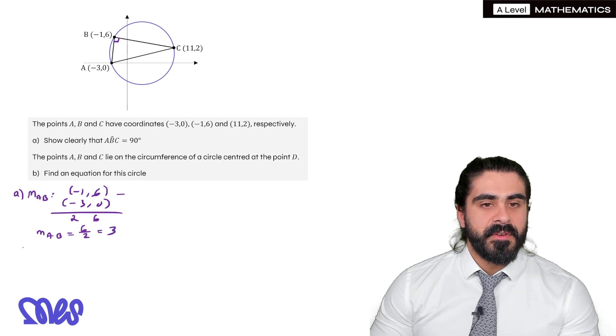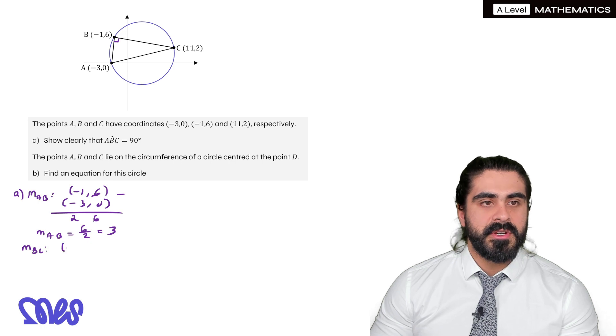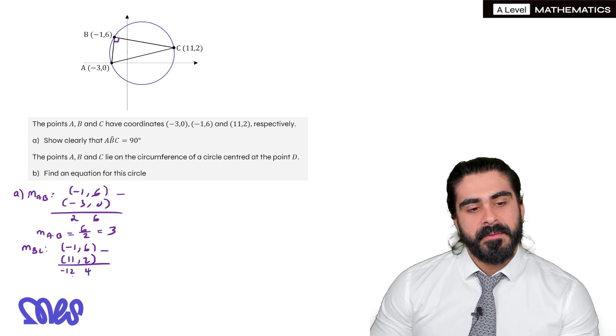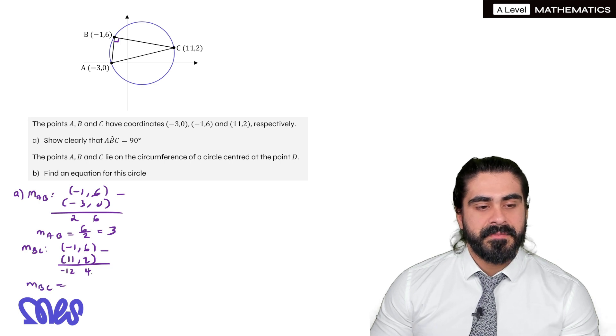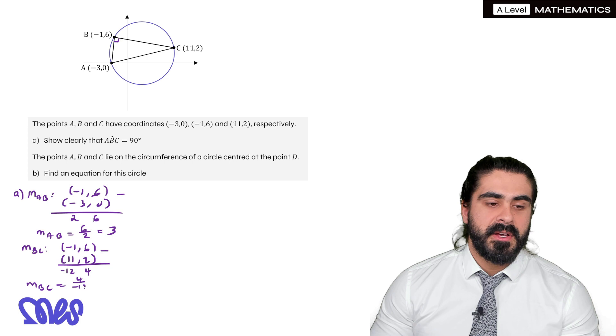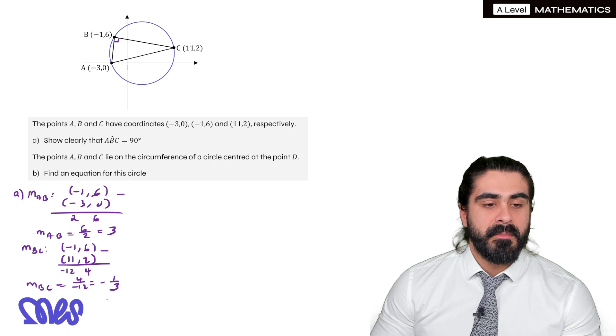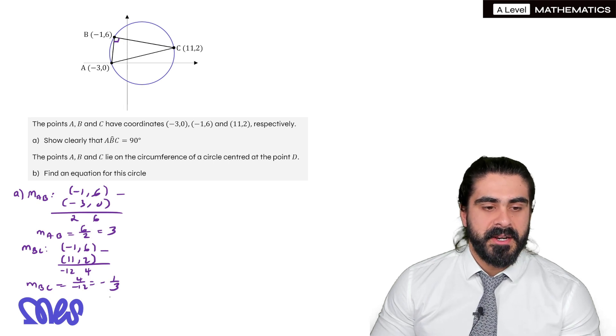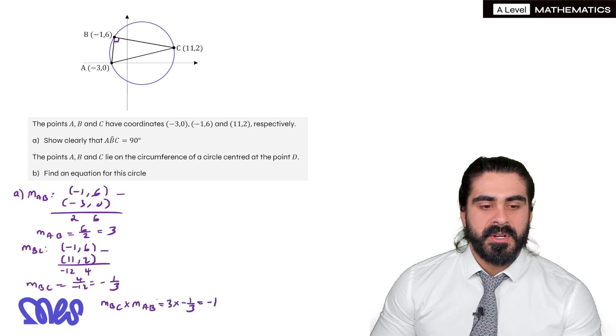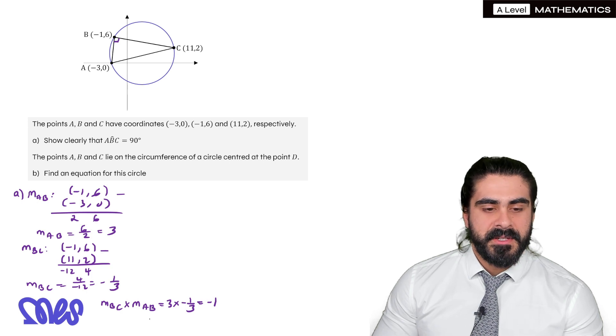Now let's find the gradient of BC. We're going to take away the coordinates minus 1, 6 minus 11, 2. Minus 1 minus 11 is minus 12, 6 minus 2 is 4. So the gradient of BC is 4 divided by minus 12, which is minus a third. Then how do we prove that's perpendicular? We multiply them together and show that equals minus 1. The gradient of BC times the gradient of AB is 3 times minus a third which is minus 1, therefore perpendicular.